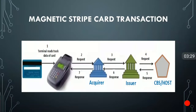All validations and authorizations happen at the issuer bank end, and after that the request is transferred to the host where the accounting part is done. The response comes back to the issuer, the issuer sends it to the network, the network sends it to the acquirer, and the final response comes to the POS device.